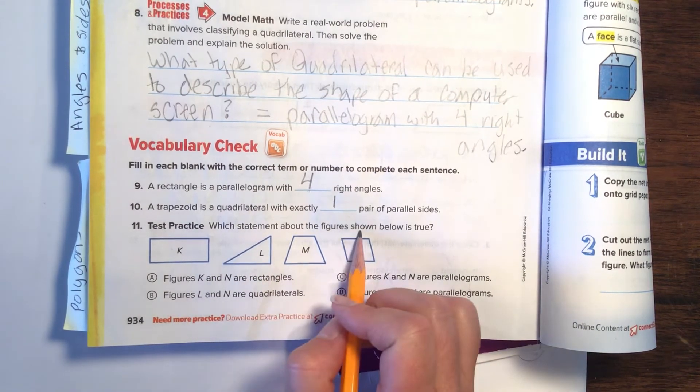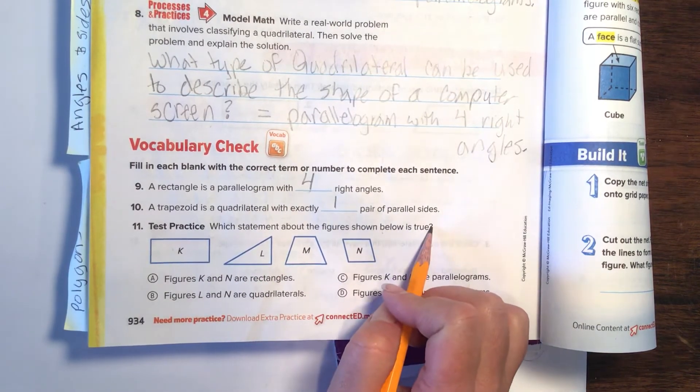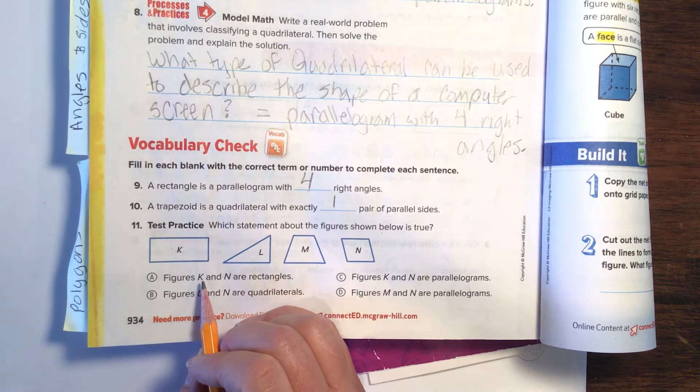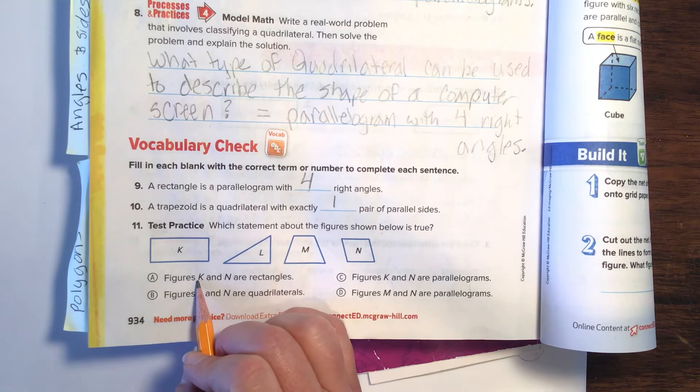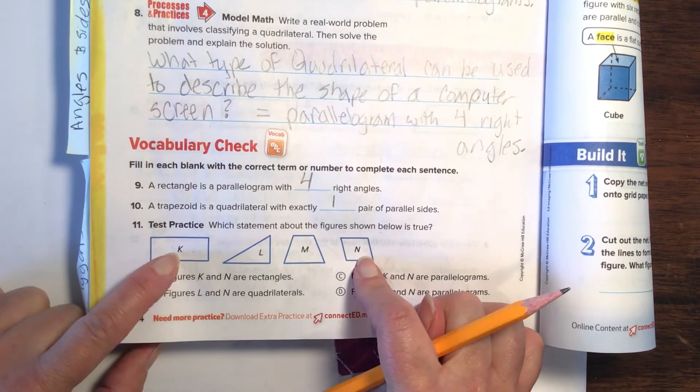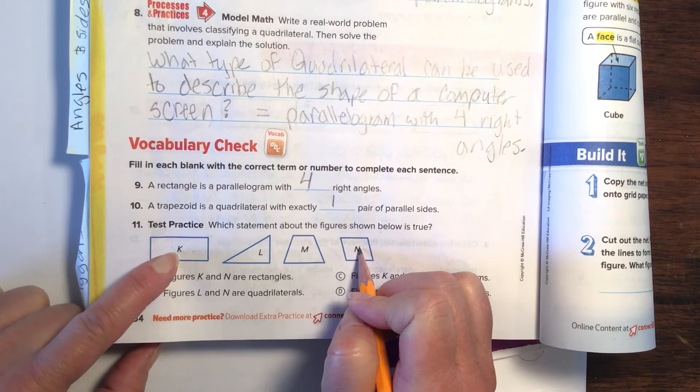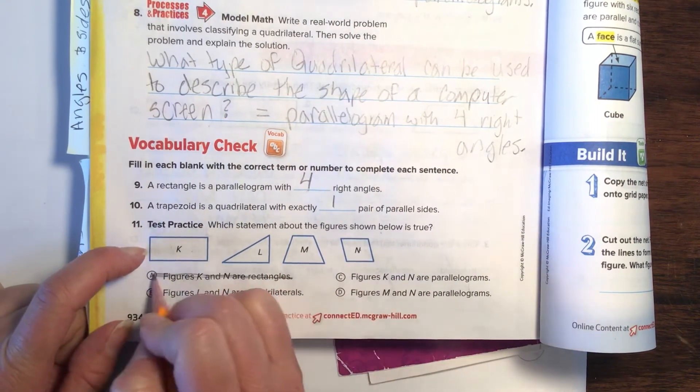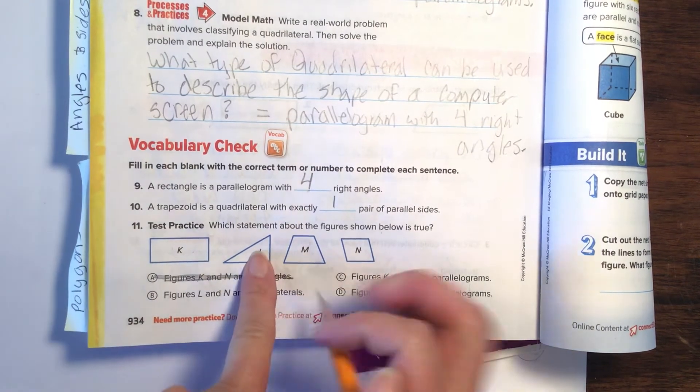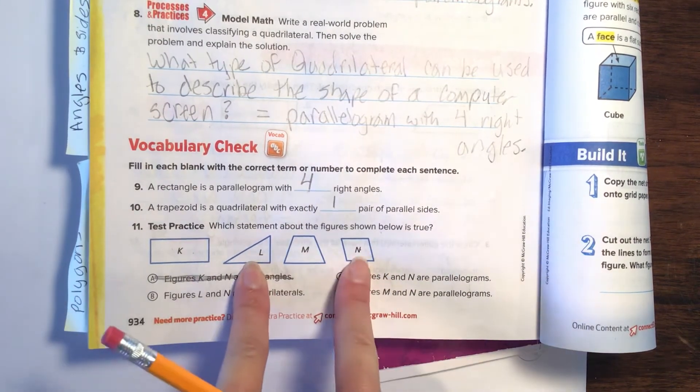Number 11. Which statement about the figure shown below is true? We've got to figure out. Let's go through and analyze each one. Figures K and N are rectangles. No, that one is a rhombus. It does not have any right angles. So that is totally not correct.